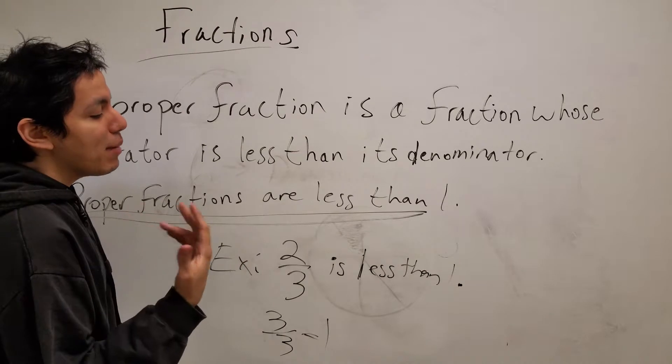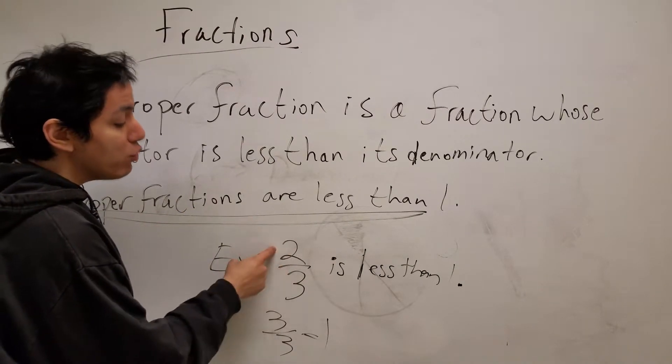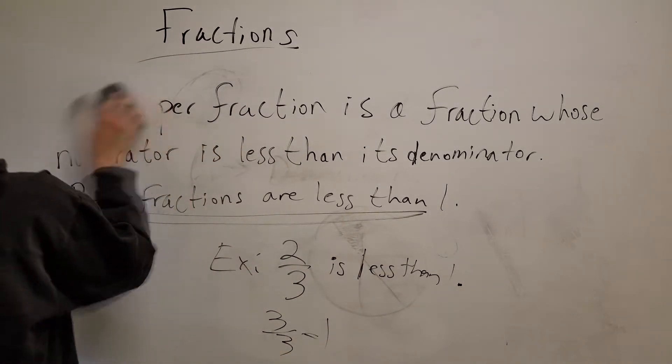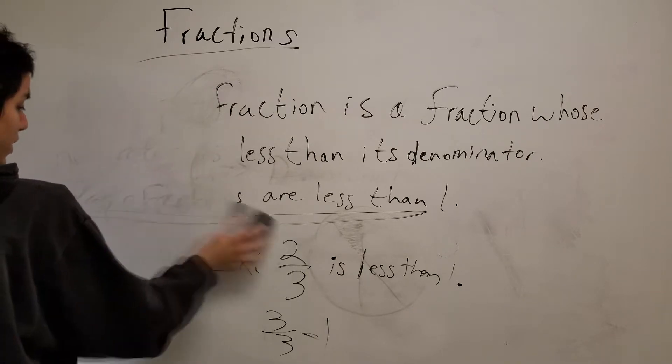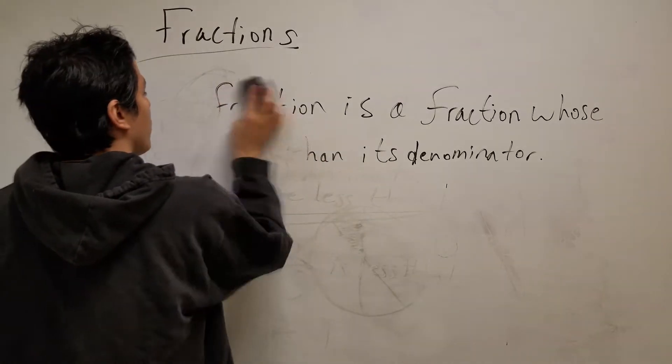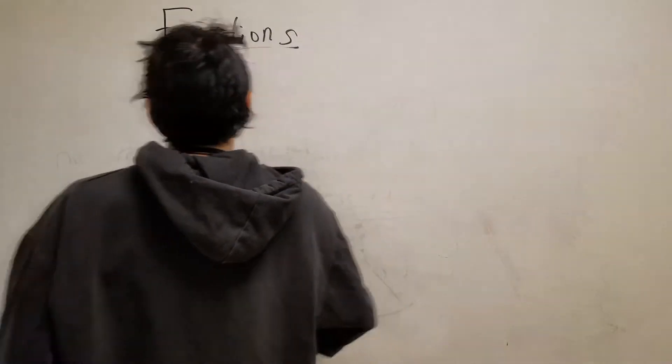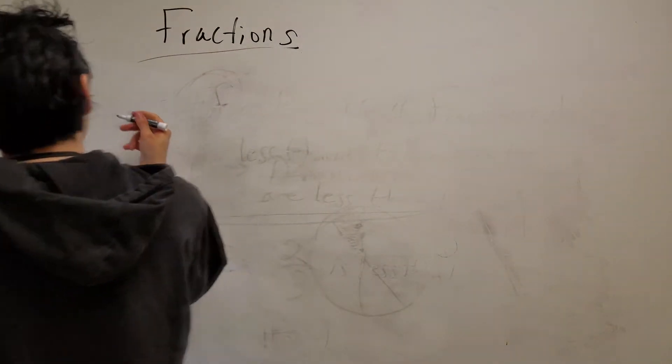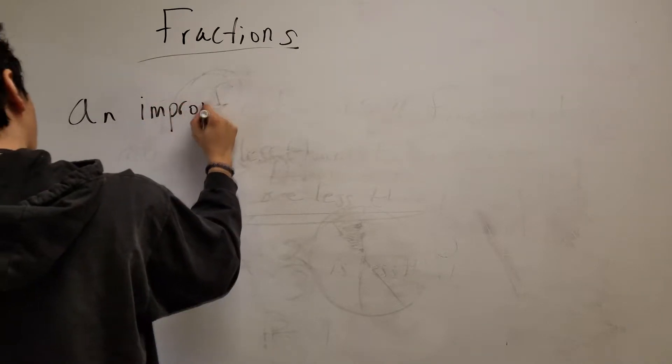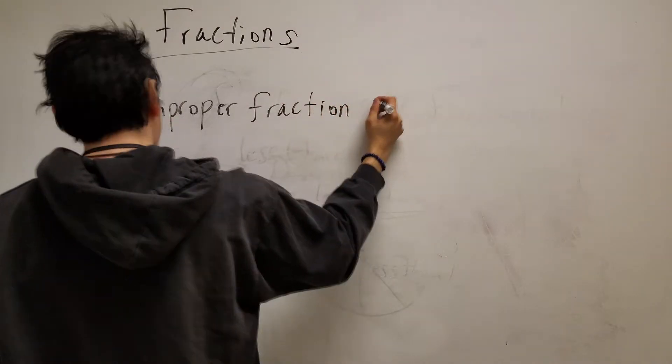Now, what happens if it's the opposite? What happens if the denominator is smaller and the numerator is bigger? If you guys haven't figured it out, if we know proper fractions where the numerator is smaller than the denominator, then that means the opposite is an improper fraction. So what is an improper fraction?